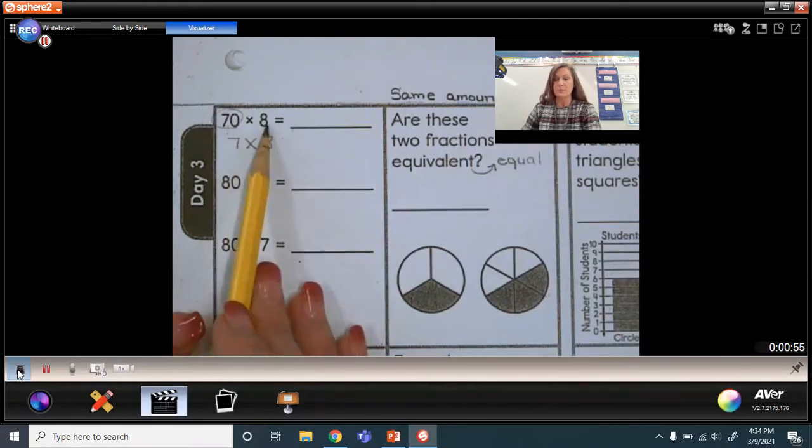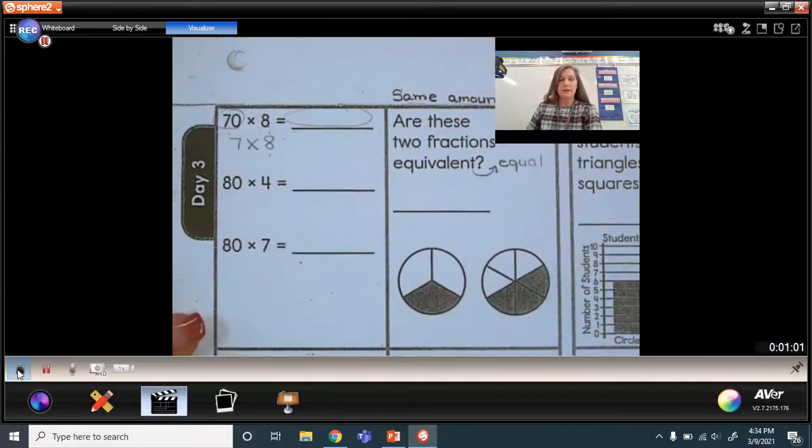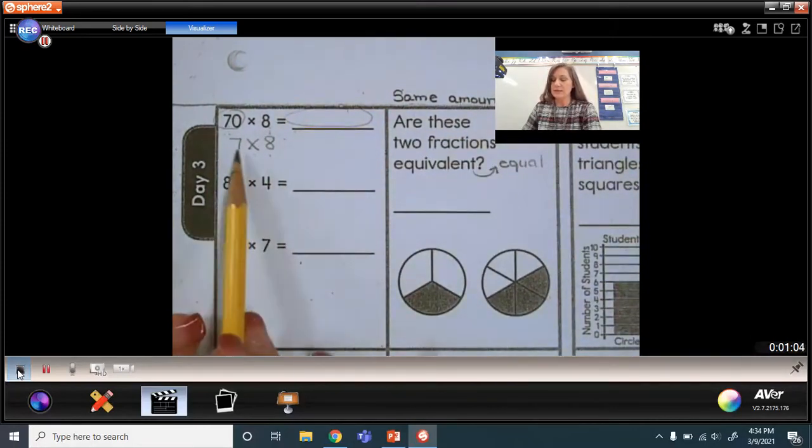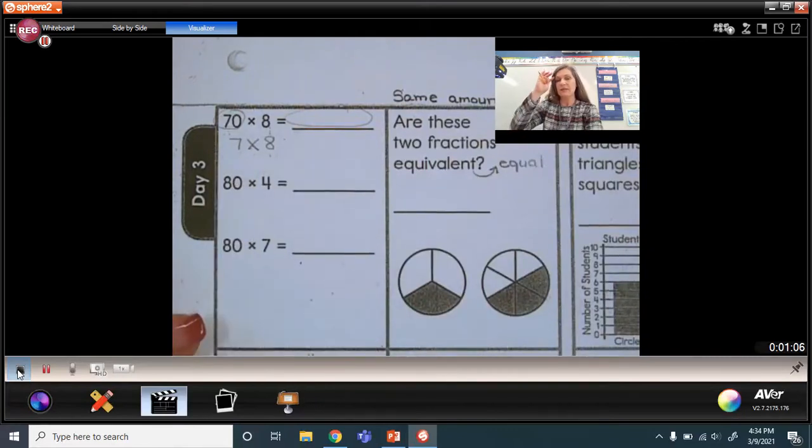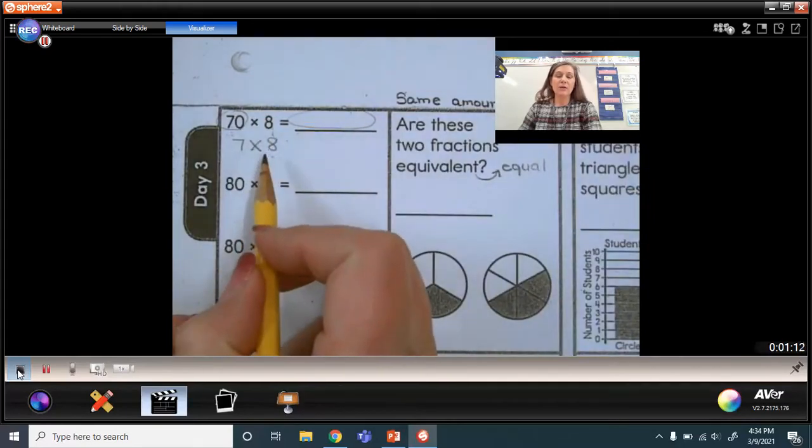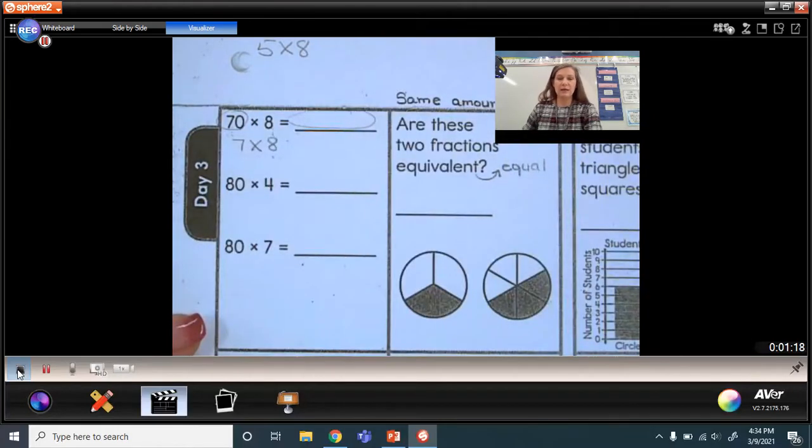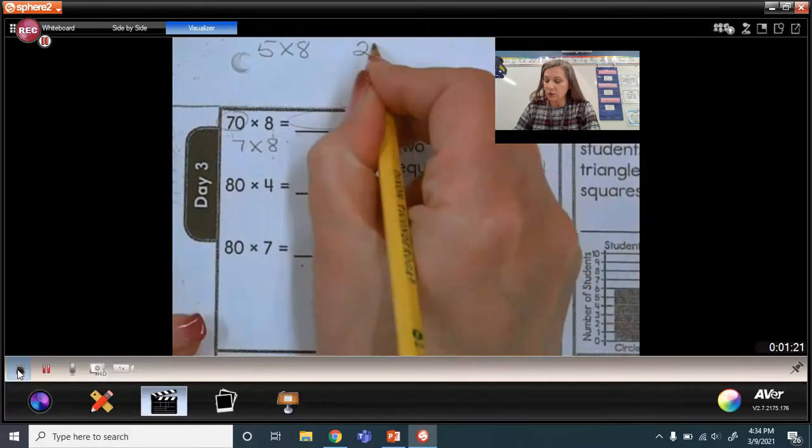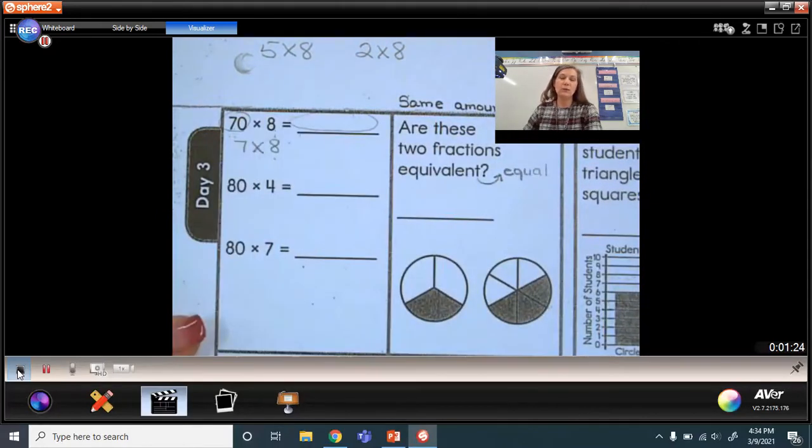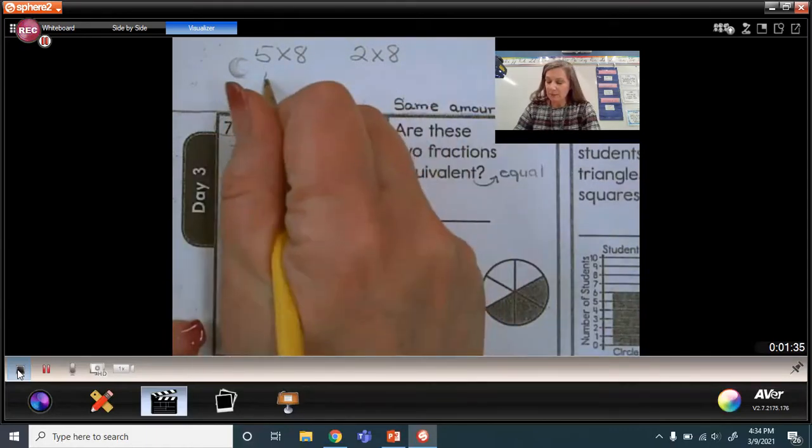Remember, these are called factors. Factors are the numbers that you're multiplying. We're looking for the product. Now, how could I do this using 7 times 8? So my basic fact is 7 times 8. If I didn't know what 7 times 8 was, I could use 5 times 8, which would be 5 rows of 8. Then I could do another 2 rows of 8. And I always like working with fives because they're just so easy to work with.